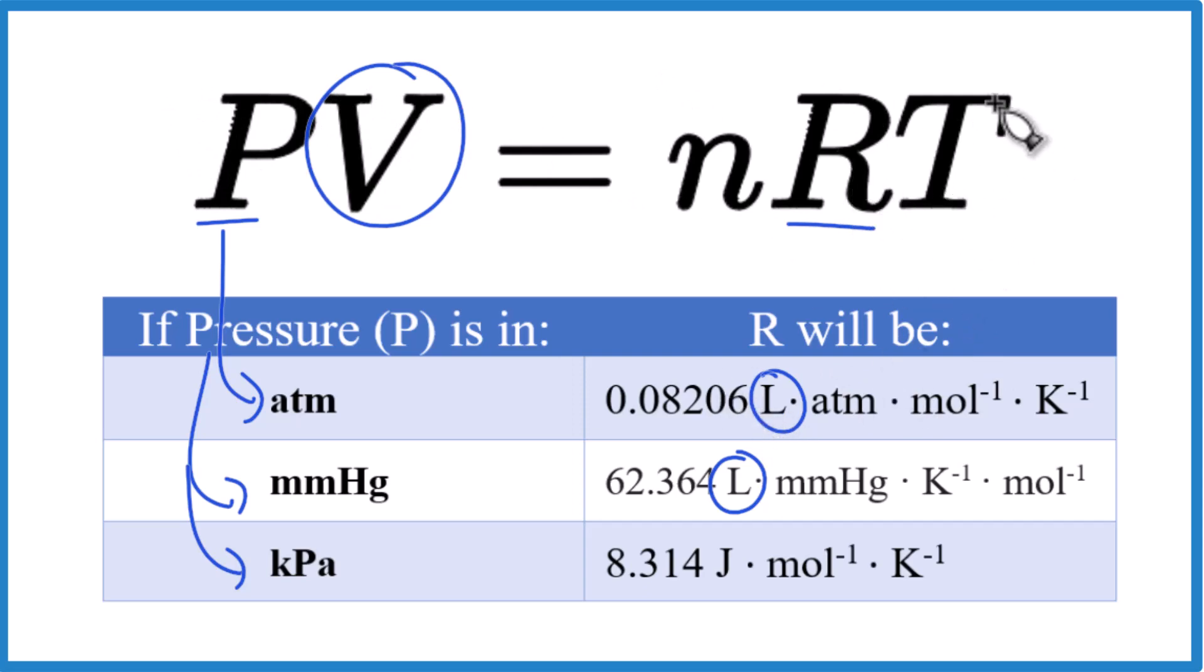Same goes for temperature. If you look at temperature here, all of these have Kelvin as the temperature scale. So with the ideal gas law, temperature has to be in Kelvin.